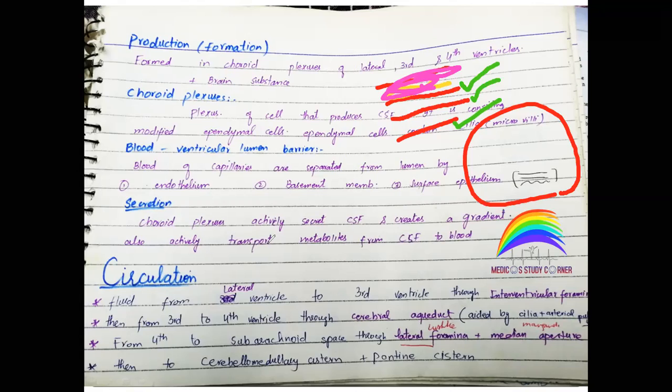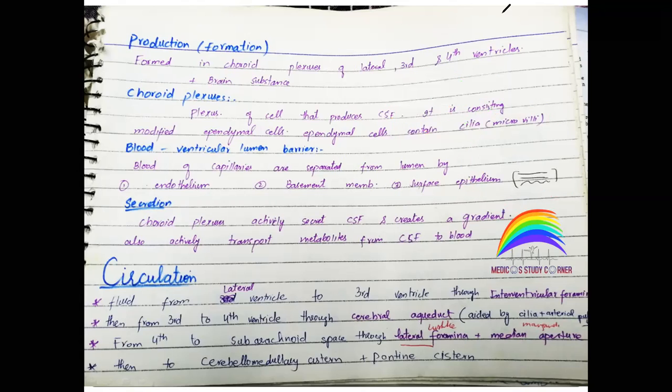The Choroid Plexus actively secretes CSF and creates a gradient. It also actively transports metabolites from the CSF to the blood. So CSF is produced from the blood and metabolites are cleared in the reverse direction.